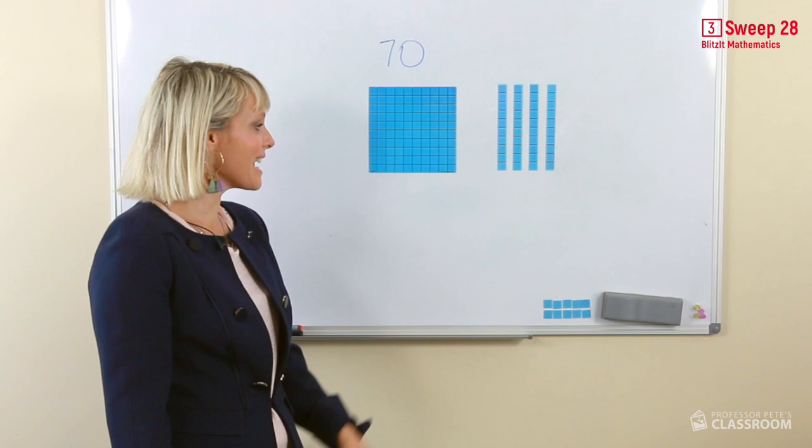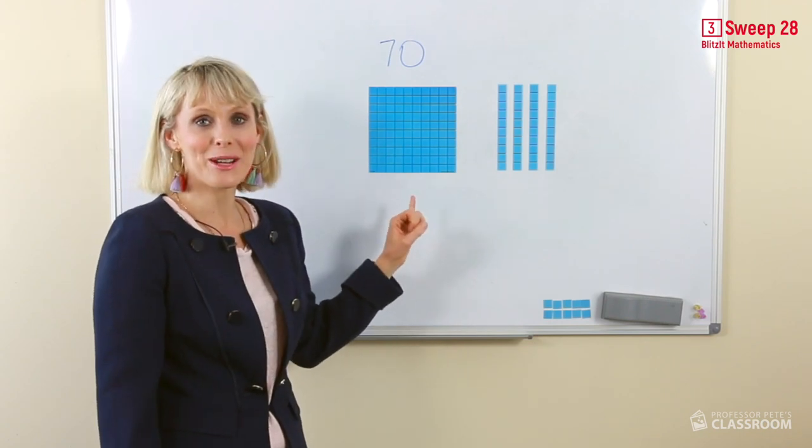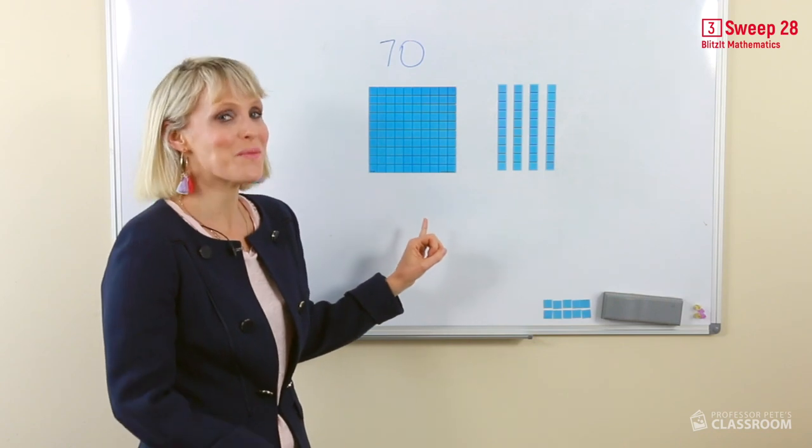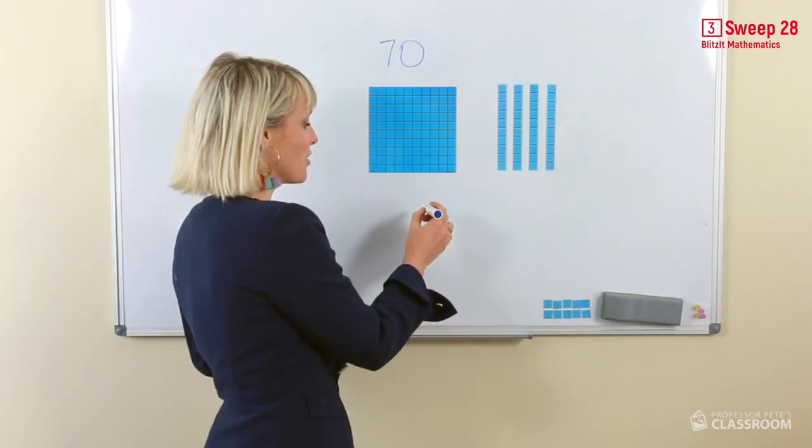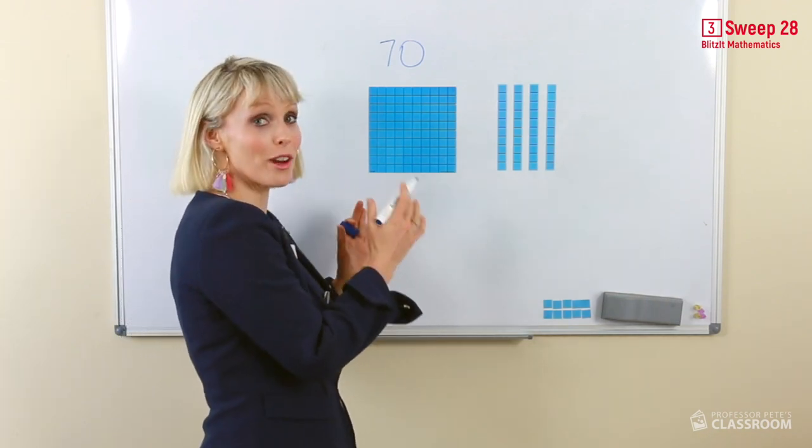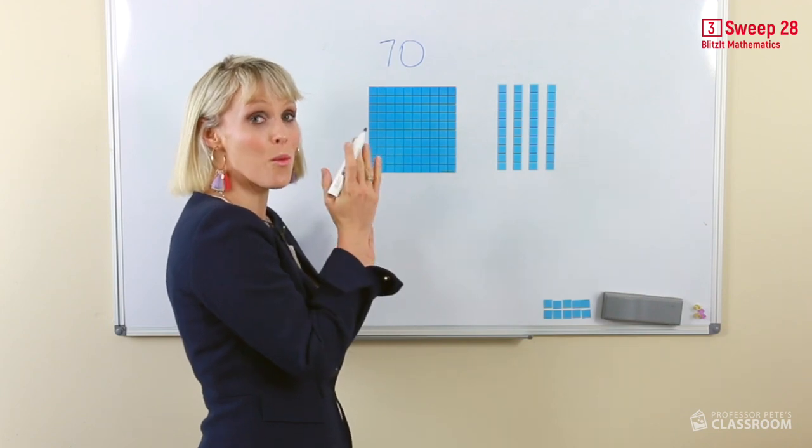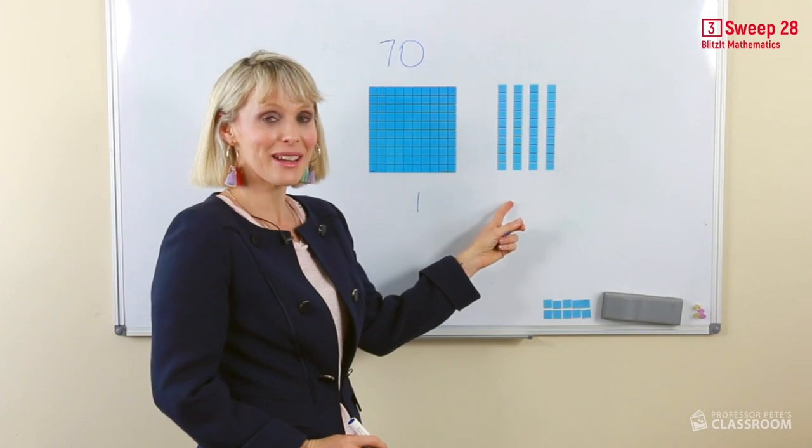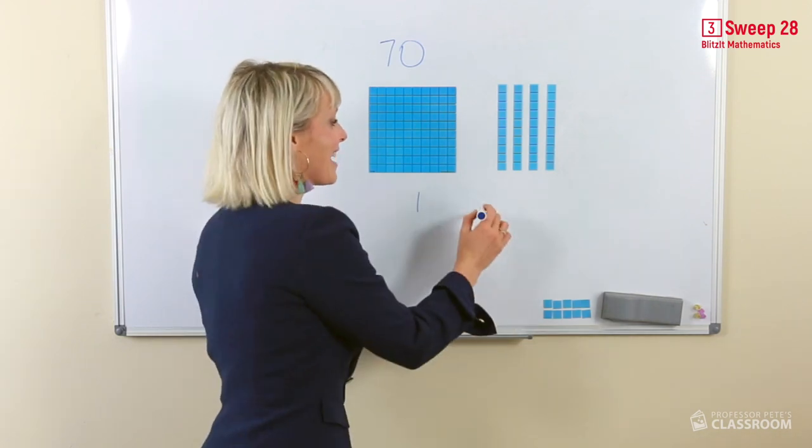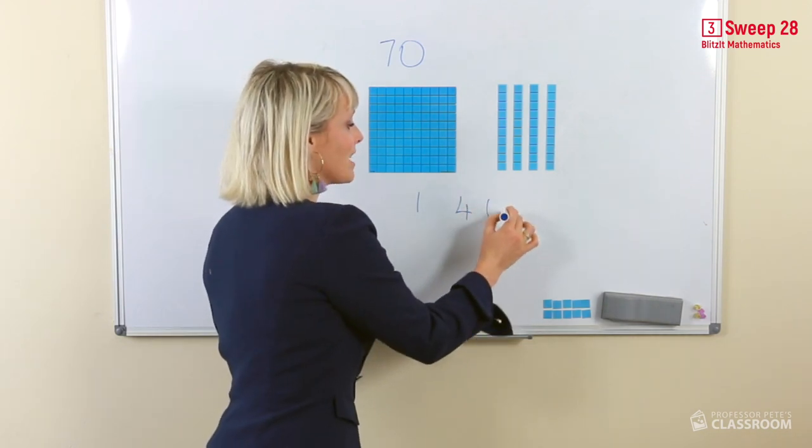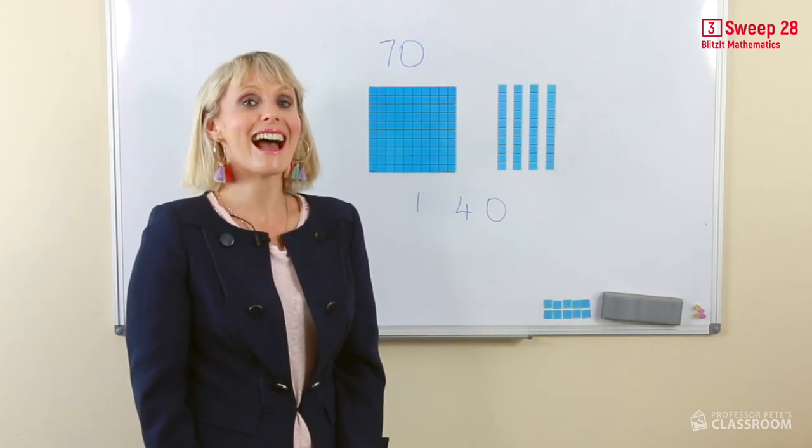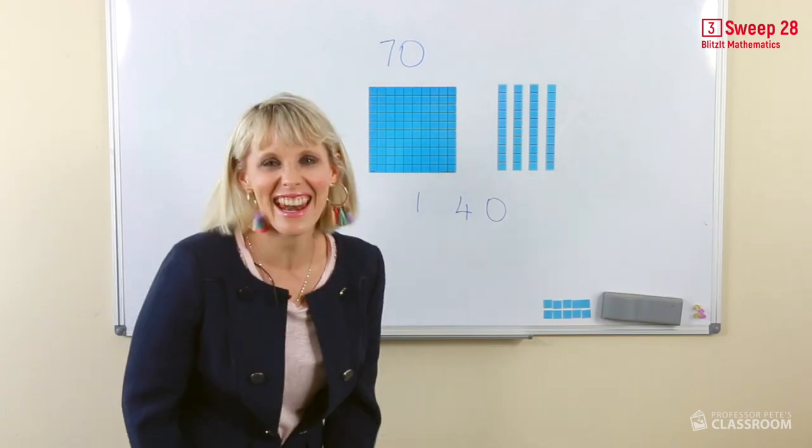Now what do we have here? We can see that we have regrouped our 10 tens. It is, well done, 100. So we need to make sure in our head we can see 100. And how many tens do we have in our tens column? That's right. Four tens. Double 70 is 140. Can you say that out loud for me?